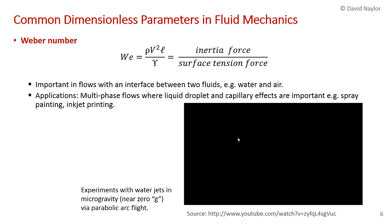Another number that comes up in fluid mechanics is called the Weber number. It comes up whenever you have a flow with an interface between two surfaces like water and air, in multi-phase flows. In these flows, surface tension is important. The Weber number is rho V squared L, where L is some characteristic dimension like the diameter of a droplet, over the surface tension. It's inertia forces over surface tension forces. It has important applications in multi-phase flows where liquid droplet effects, liquid film effects, and capillary effects are important, such as spray painting or inkjet printing.